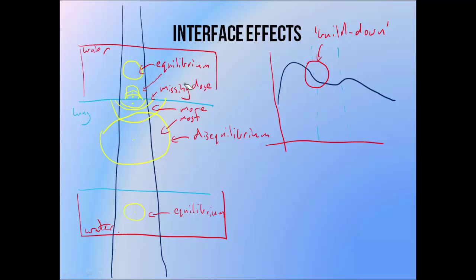We see a similar thing at the distal boundary — there'd be a point just short of the interface that would be in full disequilibrium even though it's drawing some of its dose from the water region. But moving just a little bit closer, the region inside the electron range that's not being irradiated is reduced, and this point draws a greater proportion of its dose from within the water region, which is in equilibrium, until eventually we reach a point on the other side of the boundary where none of the region inside the electron range within lung falls outside of the field. So the point is in equilibrium once again, and the beam resumes its normal dose form. This is why we see a rebuild up effect across this boundary.